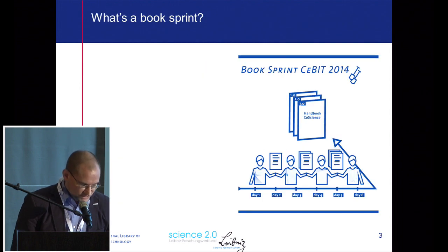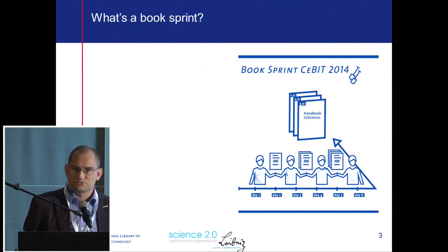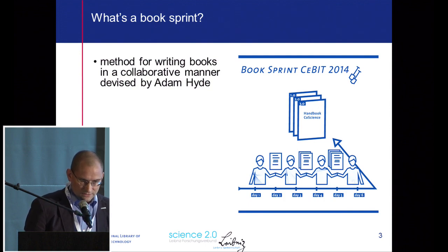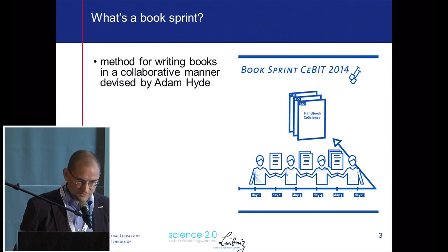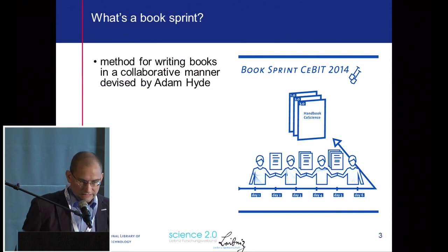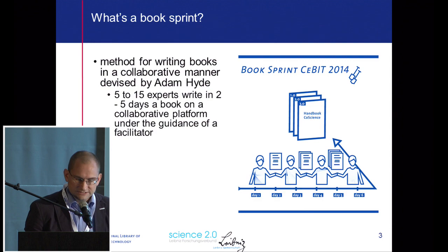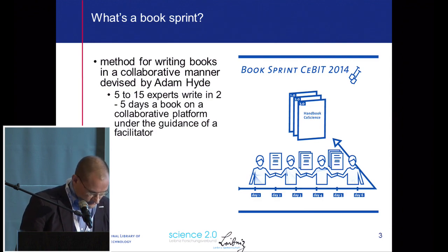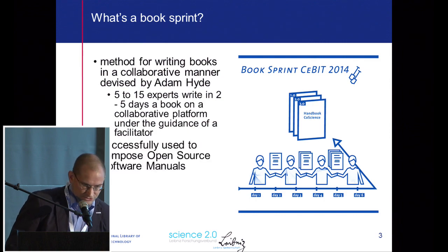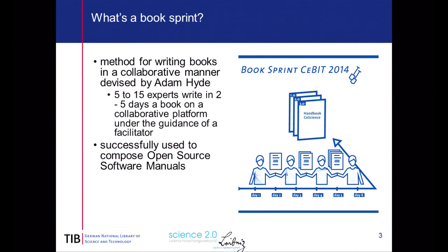What is a book sprint? Shortly put, it's a method for writing books collaboratively, devised and promoted by Adam Haidt. As a rule of thumb, five to fifteen experts write a book in two to five days on a collaborative platform under the guidance of a facilitator. This method was successfully used to compose open source software manuals and has since been transferred to other fields. For more information, please see Adam Haidt's website.